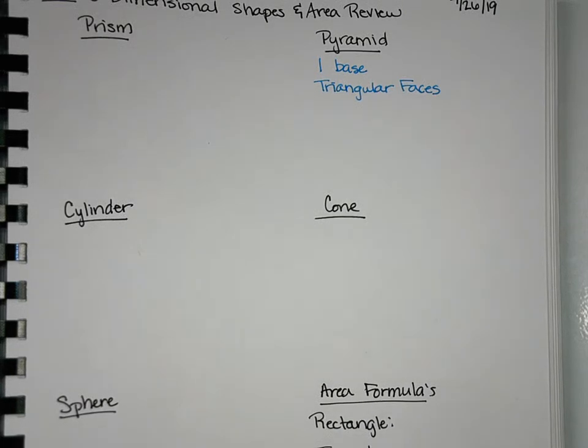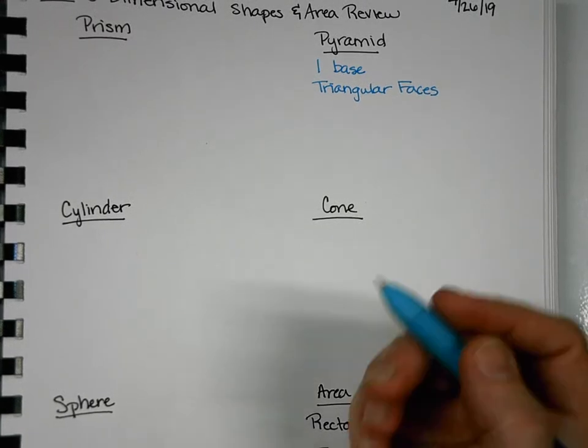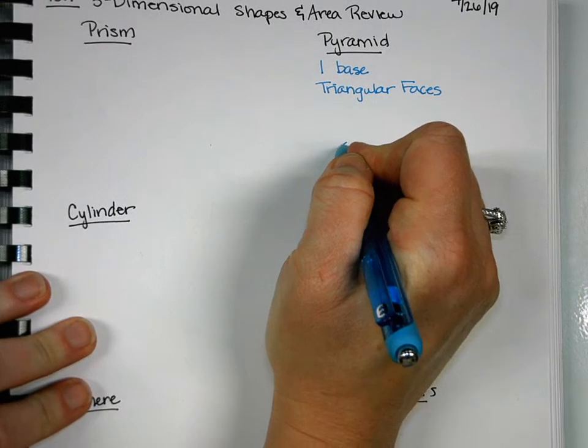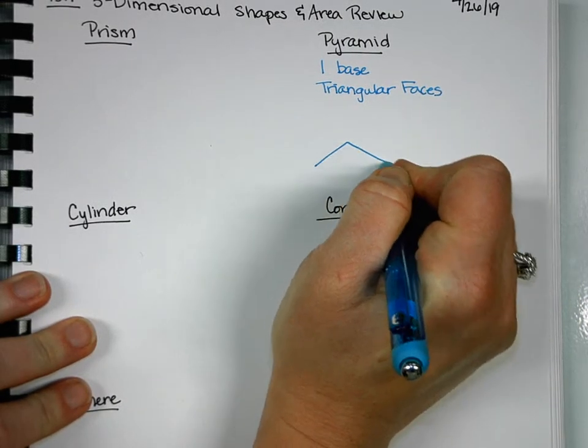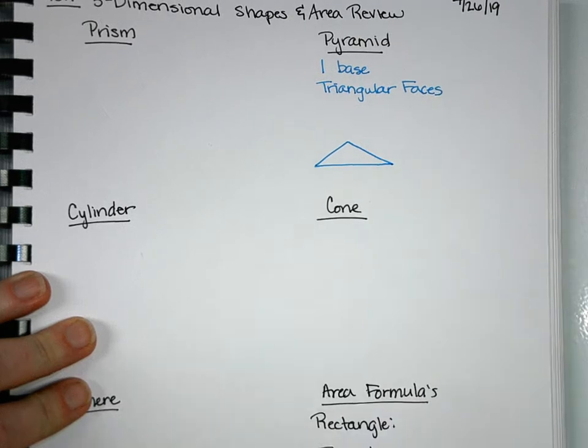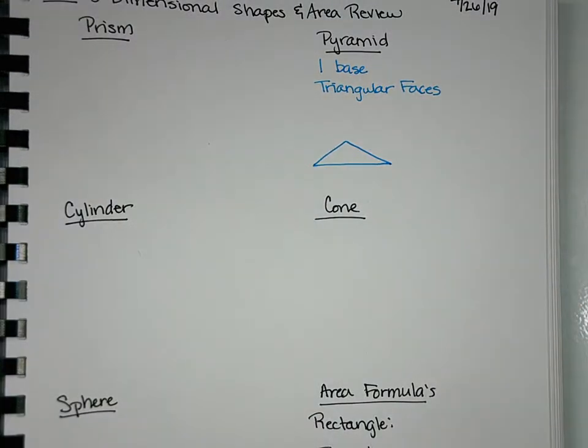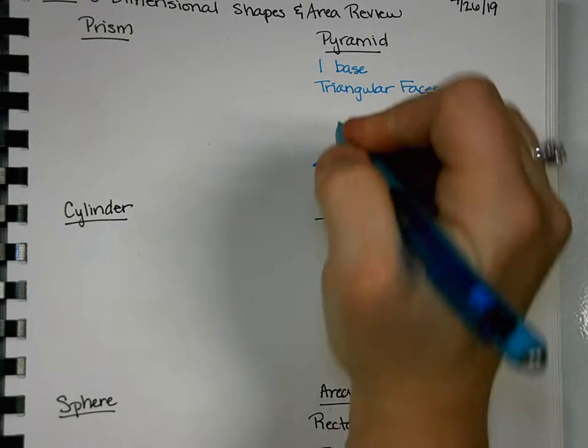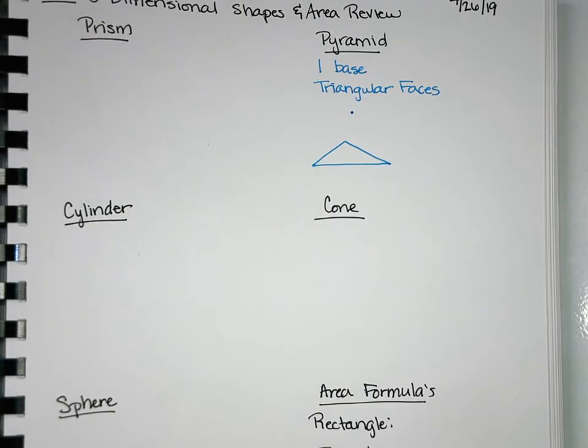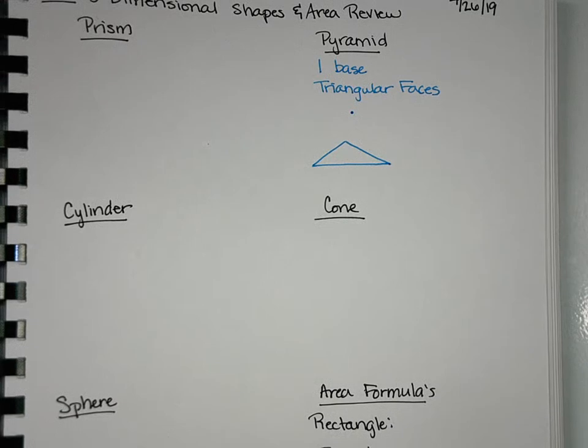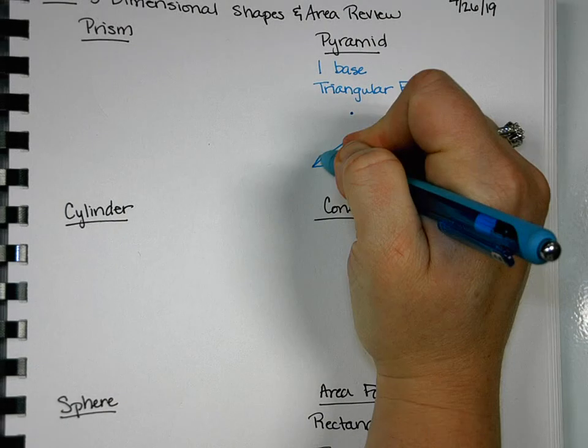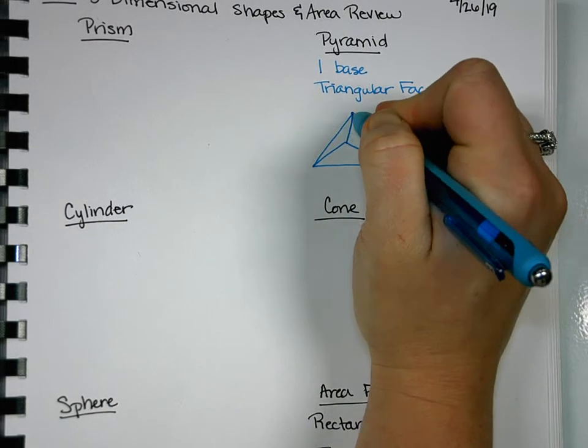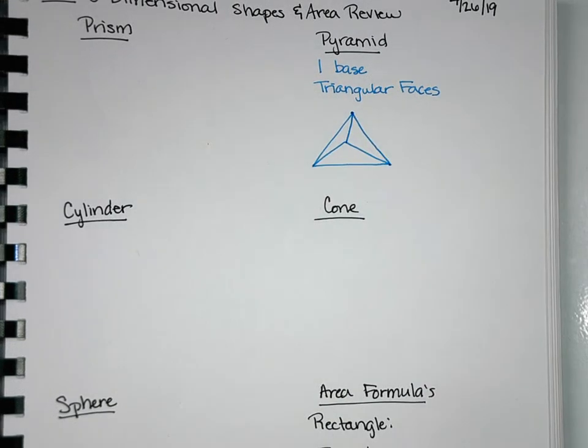So how do we draw a pyramid? Well, I'm going to draw a triangular pyramid. So to start, draw your base. So I'm going to draw a triangle. And what do we know about a pyramid? Everything comes to a point. So I'm going to go and draw a point somewhere above my triangle. Lastly, we're going to connect each vertice of our triangle with that point. And you have a triangular pyramid.